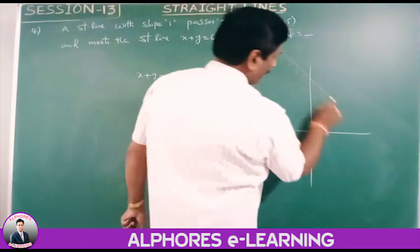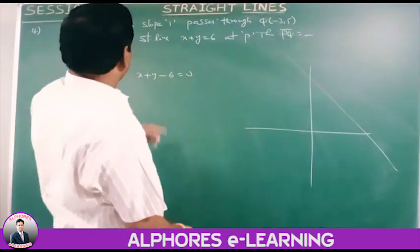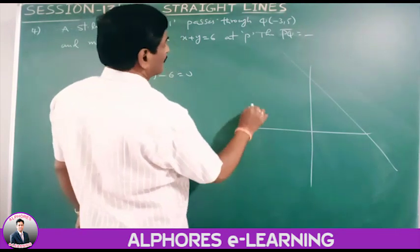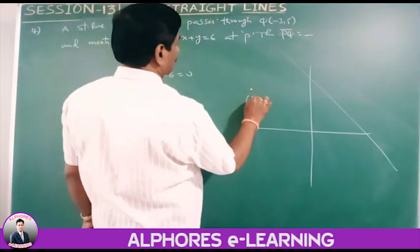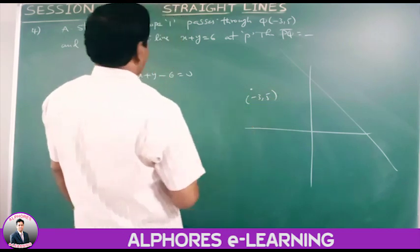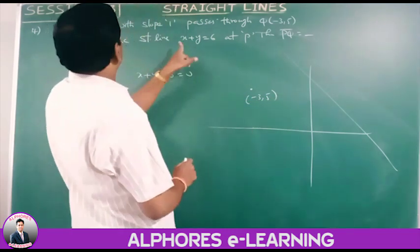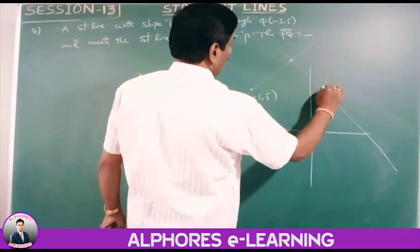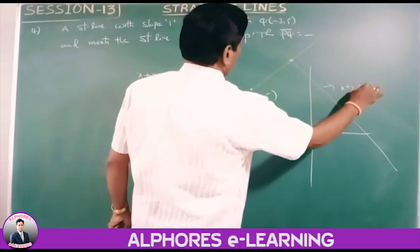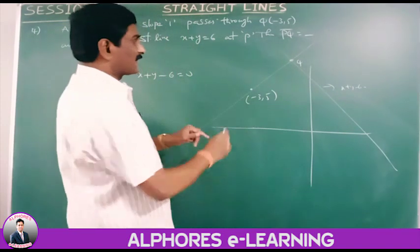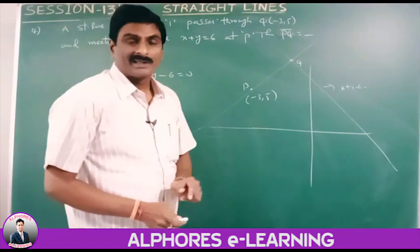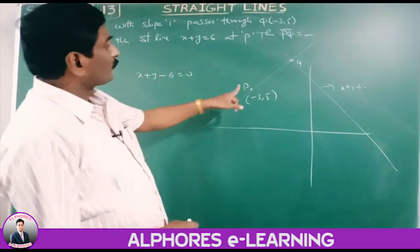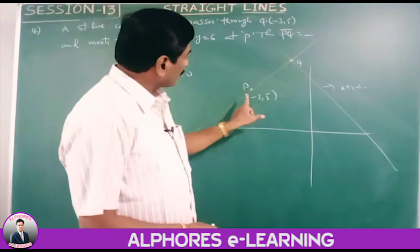Another line passes through Q(minus 3, 5) with slope 1 — meaning it makes 45 degrees with the x-axis — and meets the line x plus y minus 6 equals 0 at point P. We can find Q by solving the two line equations simultaneously. One method is to find the equation of the second line using slope-point form.